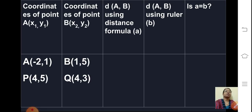Here it is observation table. In first column coordinates of point A say x1, y1. Then second column coordinates of point B say x2, y2.